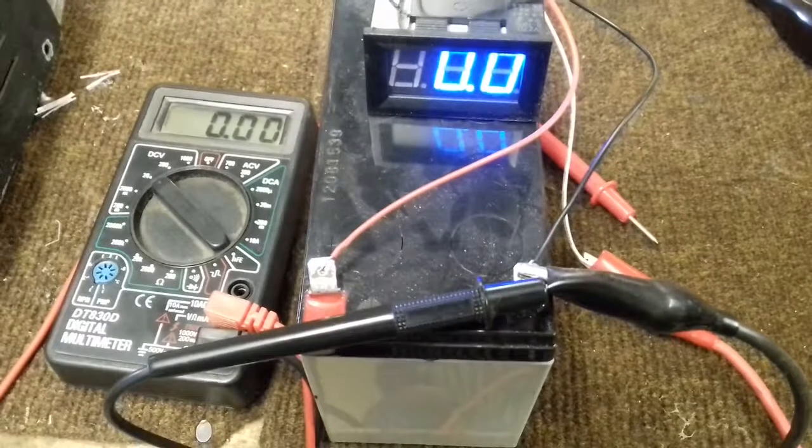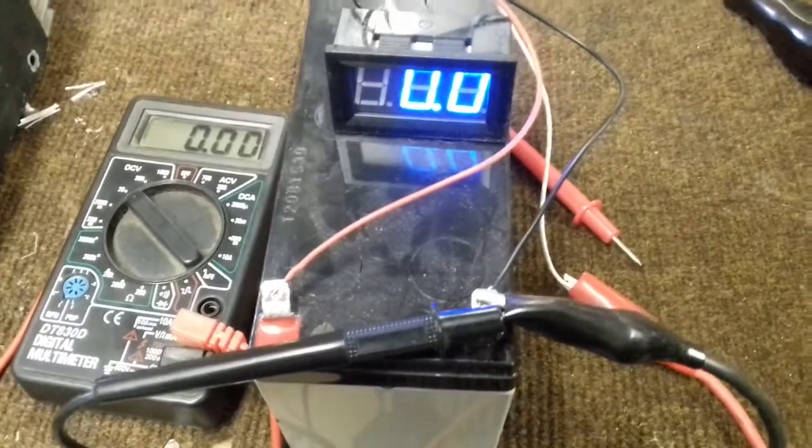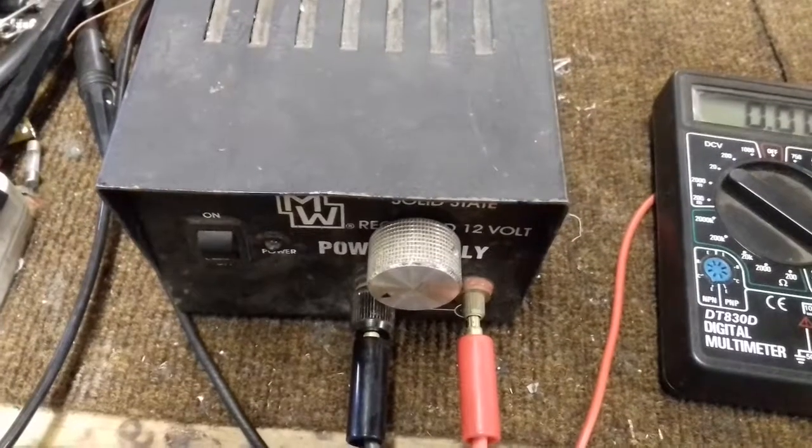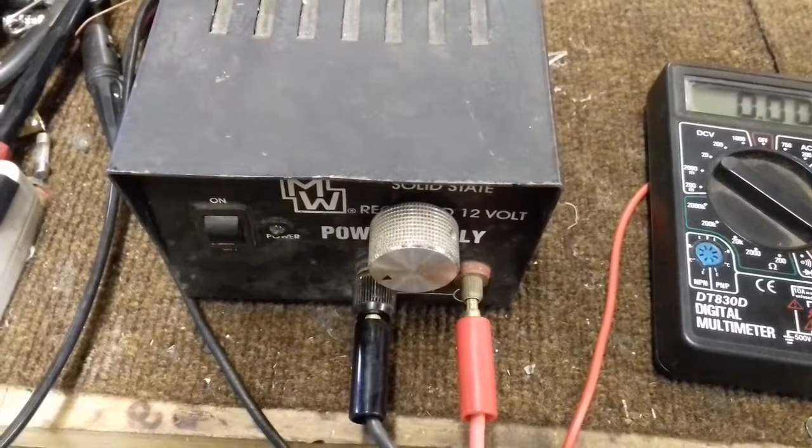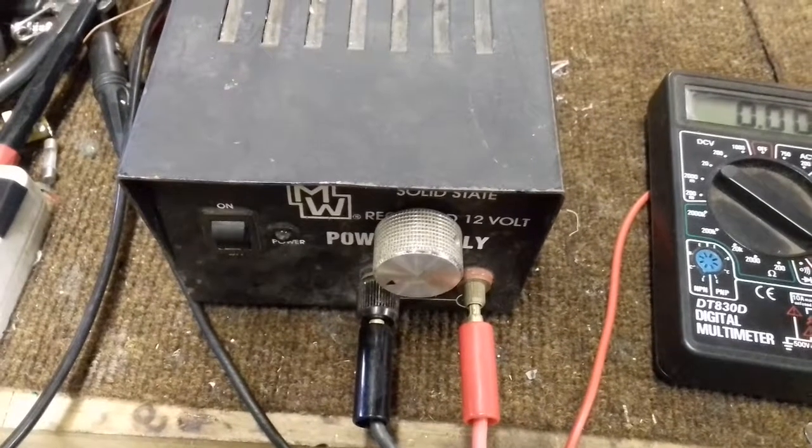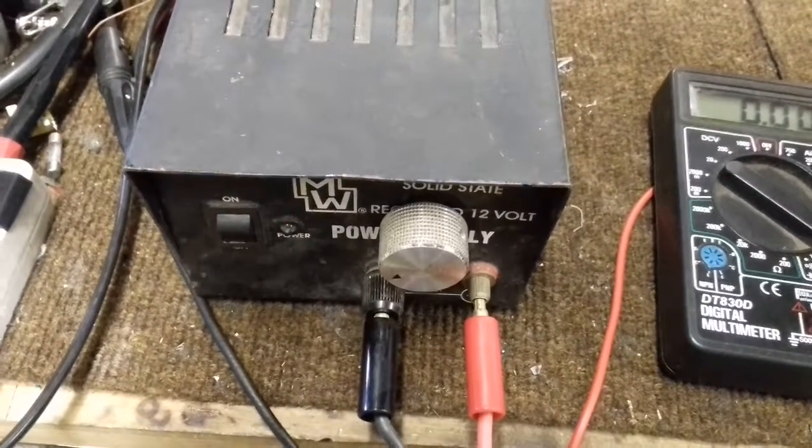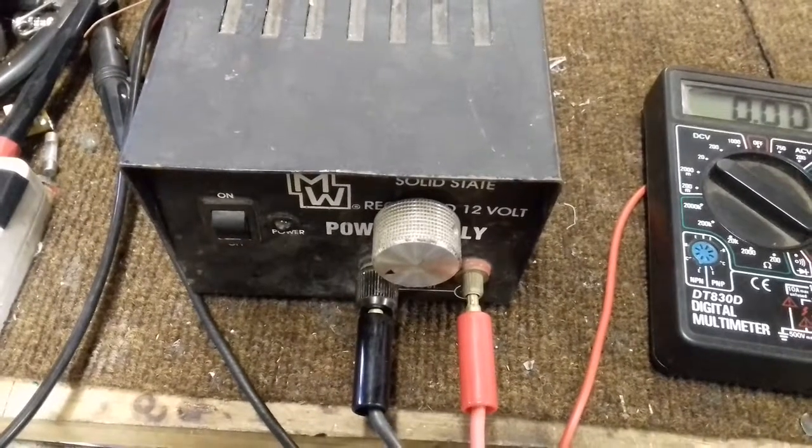The sense wire, the white wire coming from the panel meter, is connected to the variable power supply. Unfortunately, this power supply can only go to 14 volts, so I will be testing this panel meter up to that voltage.